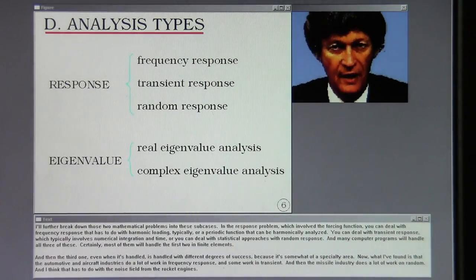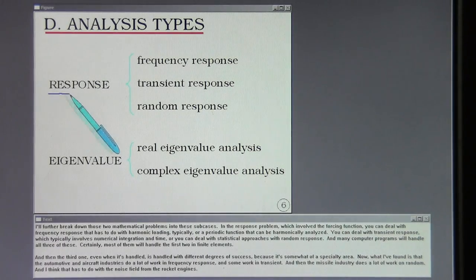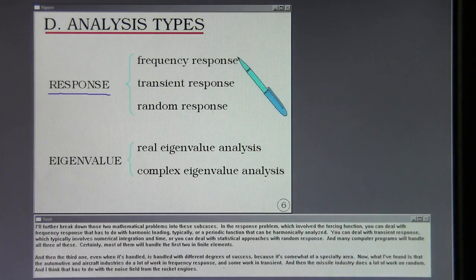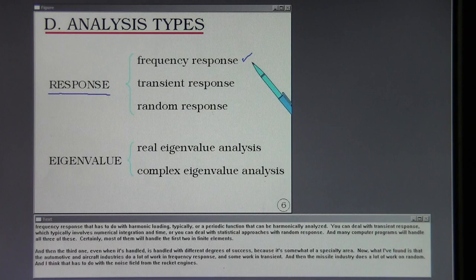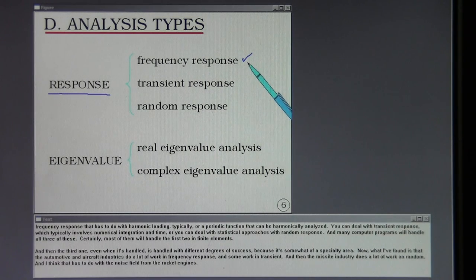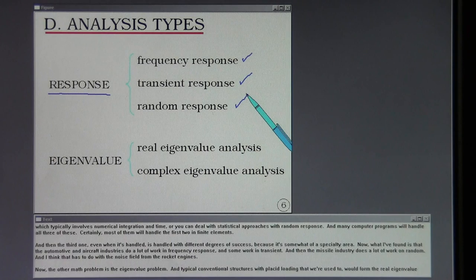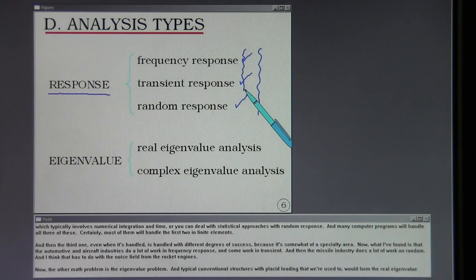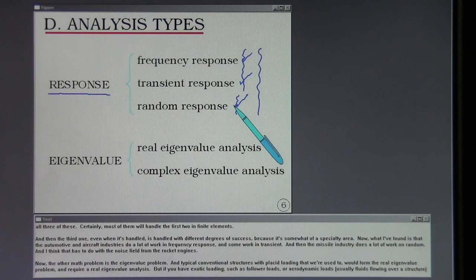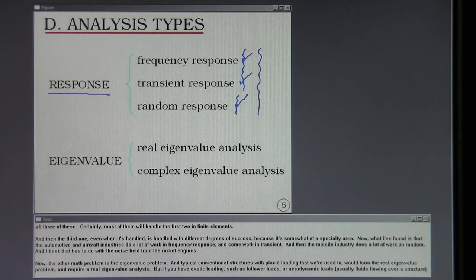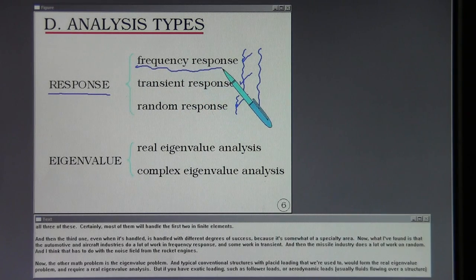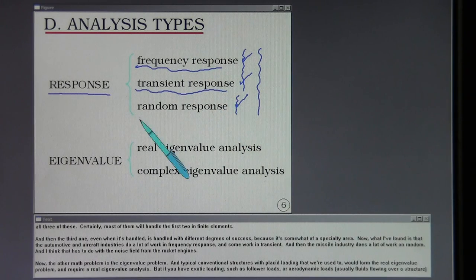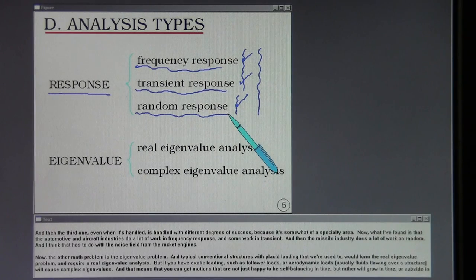I'll further break down those two mathematical problems into these sub-cases. In the response problem, which involved the forcing function, you can deal with frequency response - it has to do with harmonic loading, typically, or a periodic function that can be harmonically analyzed. You can deal with transient response, which typically involves numerical integration in time. Or you can deal with statistical approaches with random response. Many computer programs will handle all three of these. Certainly, most of them will handle the first two in finite elements. The third one, even when it's handled, is handled with different degrees of success because it's somewhat of a specialty area. What I found is that the automotive and aircraft industries do a lot of work in frequency response and some work in transient. The missile industry does a lot of work on random, and I think that has to do with the noise field from the rocket engines.